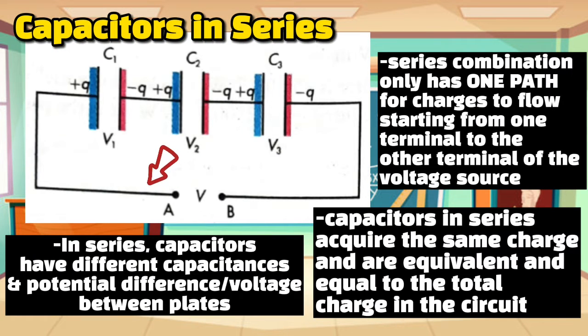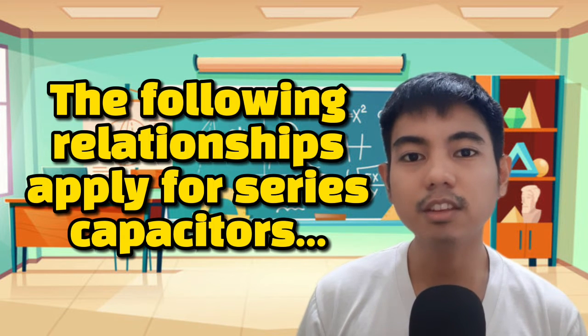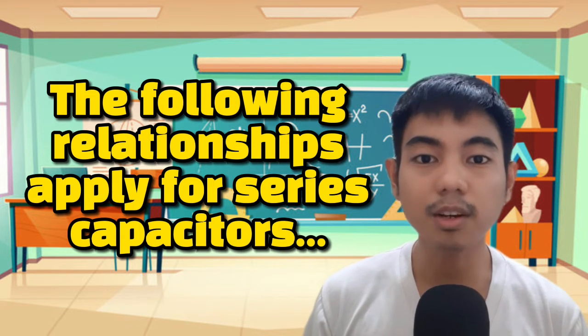If you look closely, the series combination only has one path for charges to flow, starting from one terminal to another terminal of the voltage source. For that reason, capacitors in series acquire the same charge and are equivalent to each other and equal to the total charge in the circuit. In series, capacitors have different capacitances and potential difference or voltage between plates. Usually, combinations of electrical components follow certain rules.